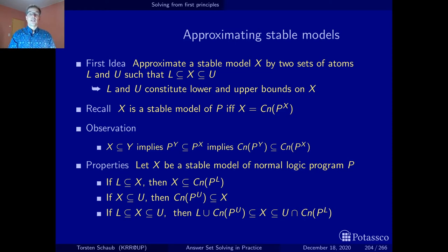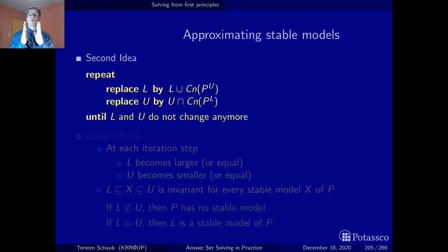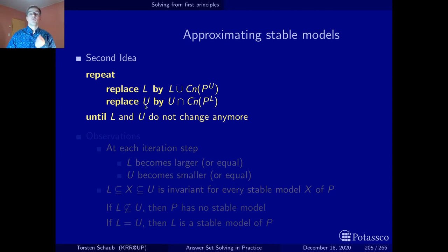The emerging algorithmic idea is to start with a lower and an upper bound, and with each iteration try to make it tighter until we can't tighten things further. We repeat the inner loop until the lower and upper bound do not change anymore. At each step we replace the lower bound with the lower bound union with the consequences of the program reduced by the upper bound, and analogously replace the upper bound with the intersection of the upper bound and the consequences of the program reduced by the lower bound.